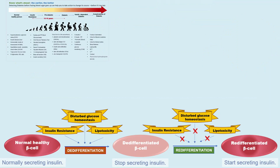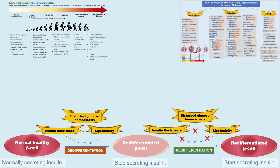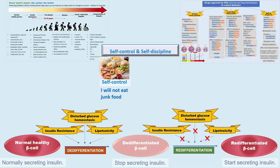With advanced diagnostic techniques and latest drugs, it is possible to put diabetes in remission. The only thing that most diabetics lack is the practice of self-control and self-discipline. You cannot beat this dreadful, crippling, silent killer without them. Self-control and self-discipline appear identical but are two different terms: self-control means 'I will not eat junk food,' while self-discipline means 'I will eat vegetables.' One without the other won't do — you need to practice both to defeat this disease. By practicing self-control and self-discipline under the instruction of a healthcare provider, you can prevent diabetes, control diabetes, revert diabetes, and for all practical purposes, cure diabetes.